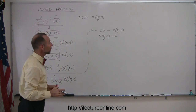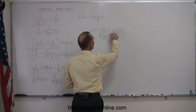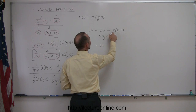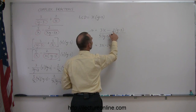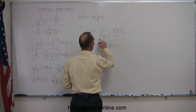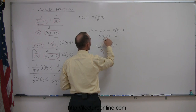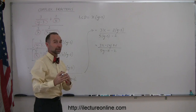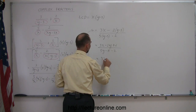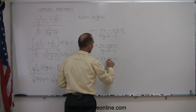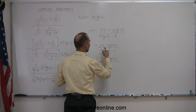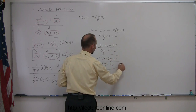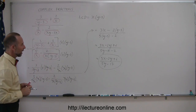I simplify by distributing the 2 with the y minus 3 and the 5 with the y minus 3. So this is 3x, and negative 2 times y minus 3 gives minus 2y plus 6. Over here, 5 times y is 5y, and 5 times negative 3 is minus 15, and I still have the minus 2. Collecting common terms, this equals 3x minus 2y plus 6, over 5y minus 17. And that's about as simple as you can make this particular fraction.